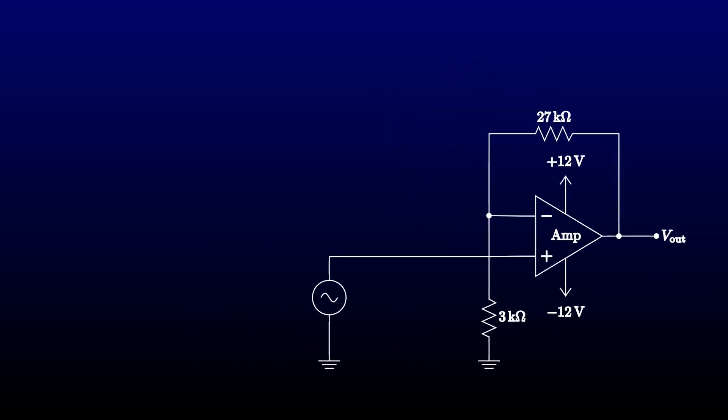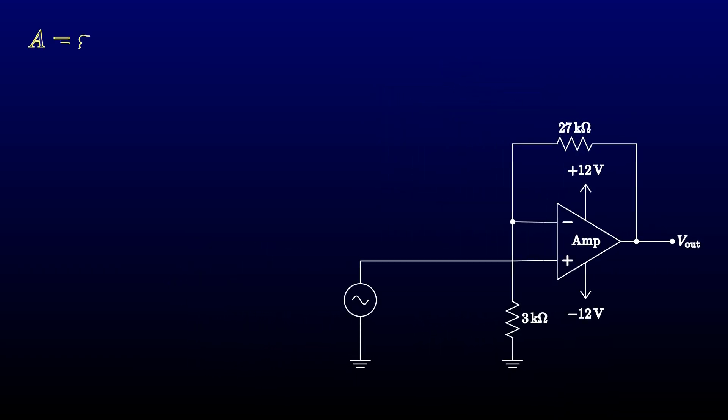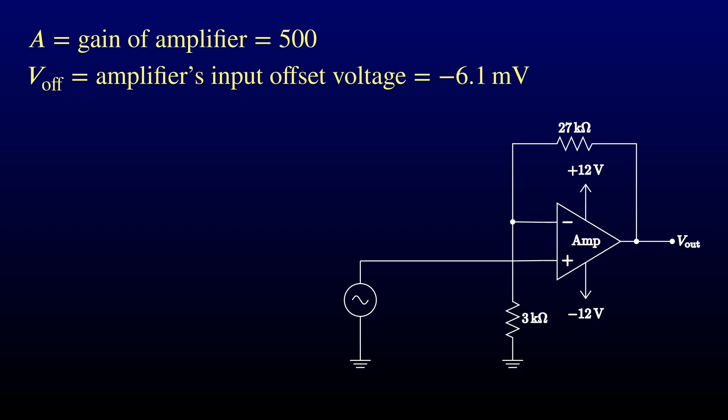A is the differential gain of our amplifier. For this amplifier, we measured it at 500. V-off is the input offset voltage of the amplifier. We measured negative 6.1 millivolts. B is the divider ratio in the feedback network, which is 10 in this design.